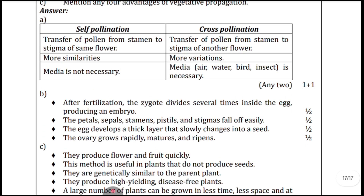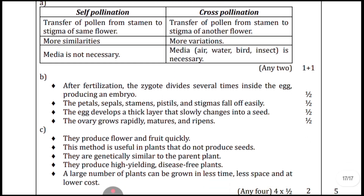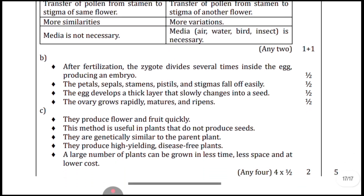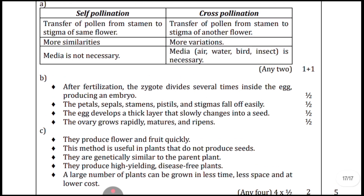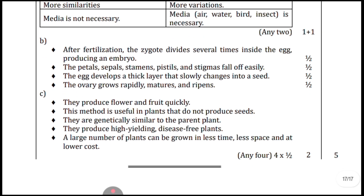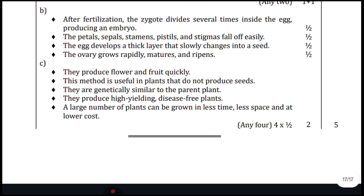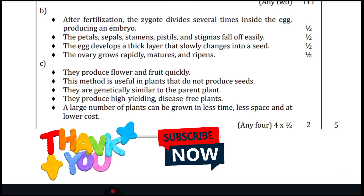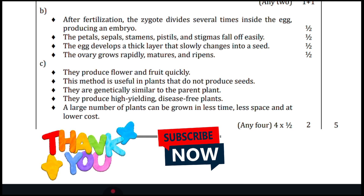For self-pollination vs cross-pollination differences: one mark each, write any two points. Part B: the points carry half a mark each. Thank you for watching till the end. Please subscribe to my channel to get all important question papers and answers. You will get answers for every question on my channel.